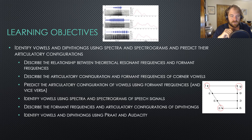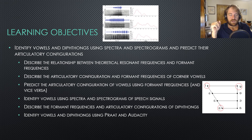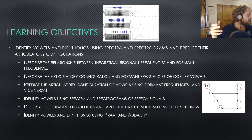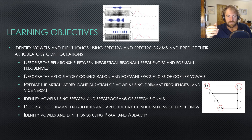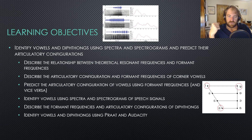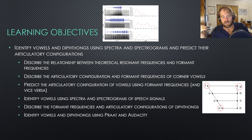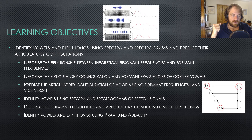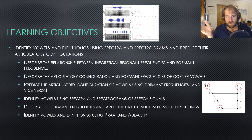We're also going to predict the articulatory configuration of vowels using formant frequencies and vice versa. So we look at the formant frequencies of, say, an E — what does the vocal tract look like? What is the tongue height, the tongue advancement, things like that? And then also, if we look at tongue height and tongue advancement, can we predict what the formant frequencies should look like? We're also going to identify vowels using spectra and spectrograms of speech signals, looking at different representations and trying to identify what vowel those are.